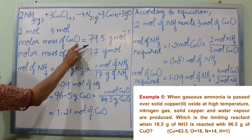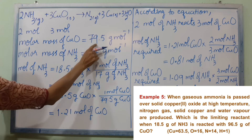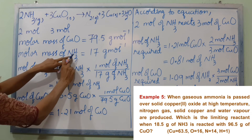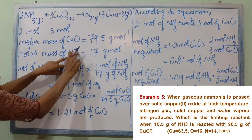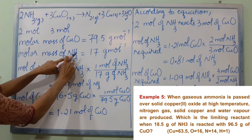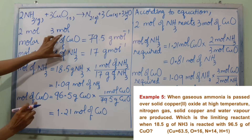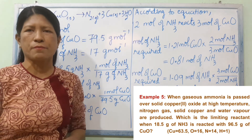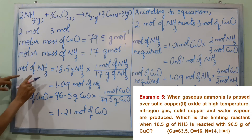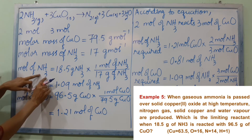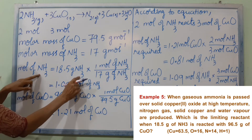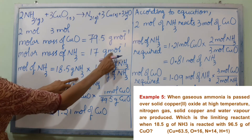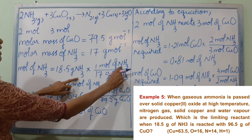Given 96.5g of CuO, we calculate moles. For NH3: we have 18.5g of NH3 with a molar mass of 17 g/mol, giving approximately 1.09 moles of NH3. For CuO: 96.5g divided by its molar mass gives approximately 1.21 moles of CuO.